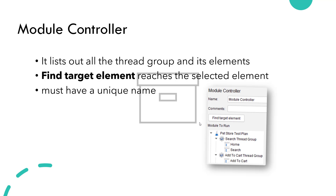Here we have the pet store test plan with a Search thread group and an Add to Cart thread group. Inside the Search thread group, we have the Home Simple Controller and Search Simple Controller. Under Add to Cart, we have the Add to Cart Simple Controller. Whenever you add the Module Controller in the Search thread group, it will list out all the thread groups and all the controllers. You can select a controller and click on Find Target Element, and it will reach there and display the element.